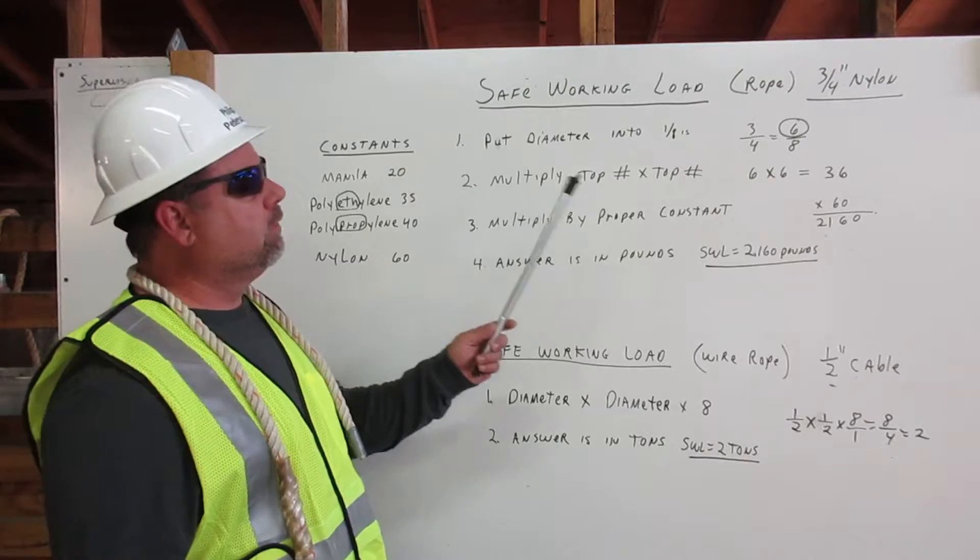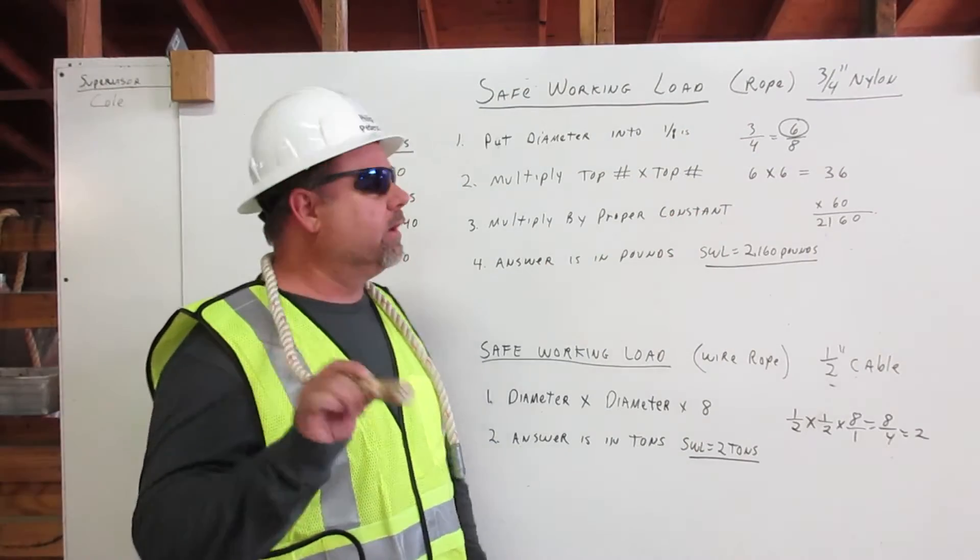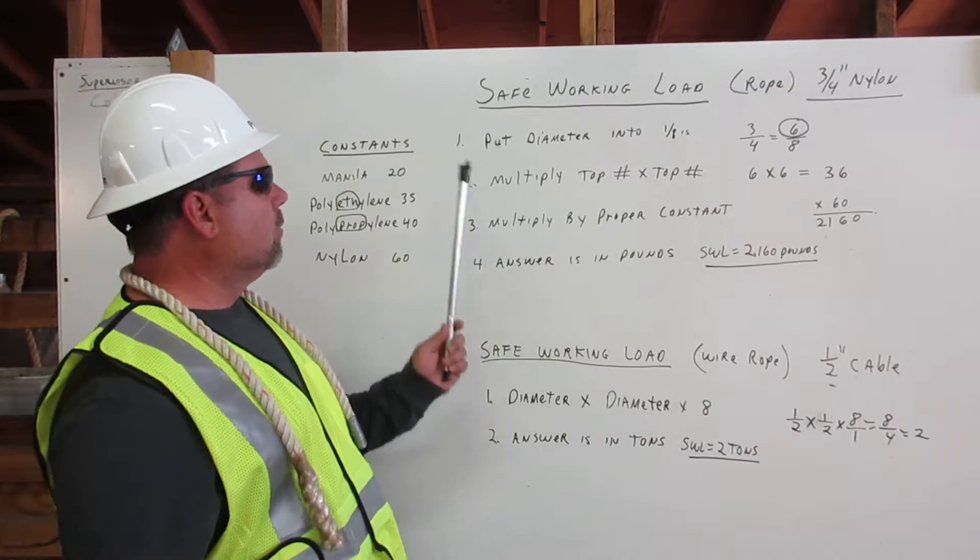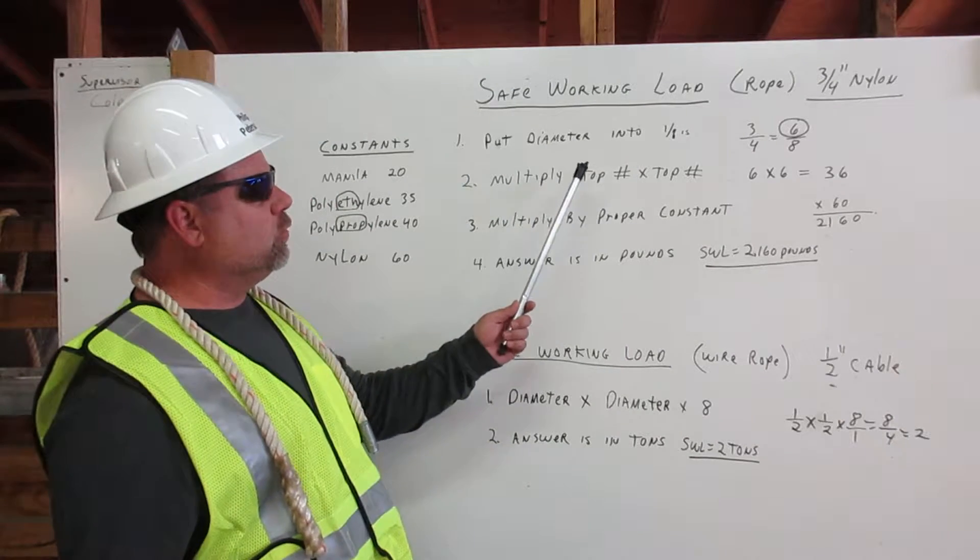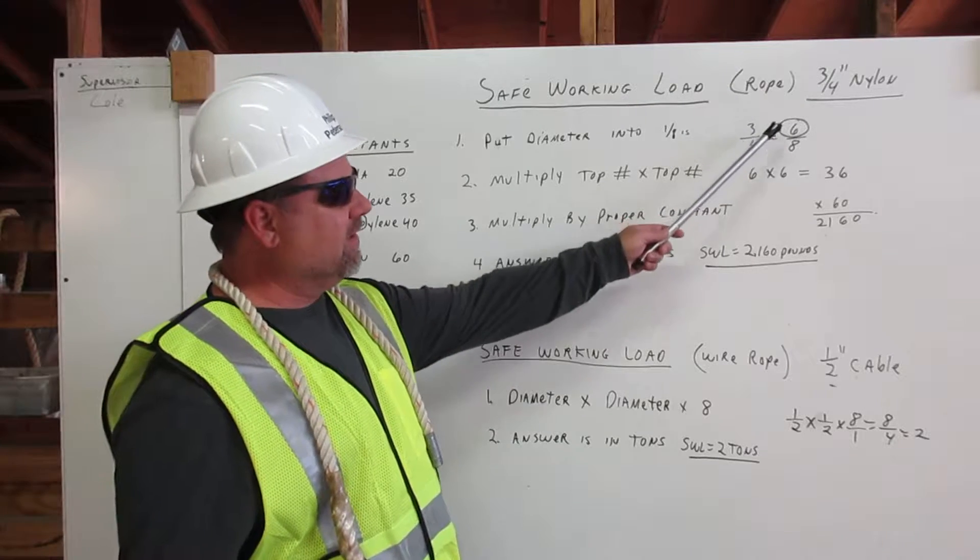Safe working load for rope. We're going to begin with three-quarter inch nylon in this example. Number one, put the diameter into eighths. Three-quarter inch equals six-eighths.